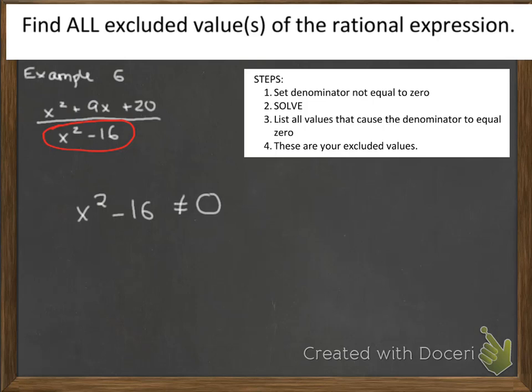You might also realize that this is a difference of squares. So we can factor it by x plus 4, x minus 4. And still, that whole expression cannot be equal to 0.